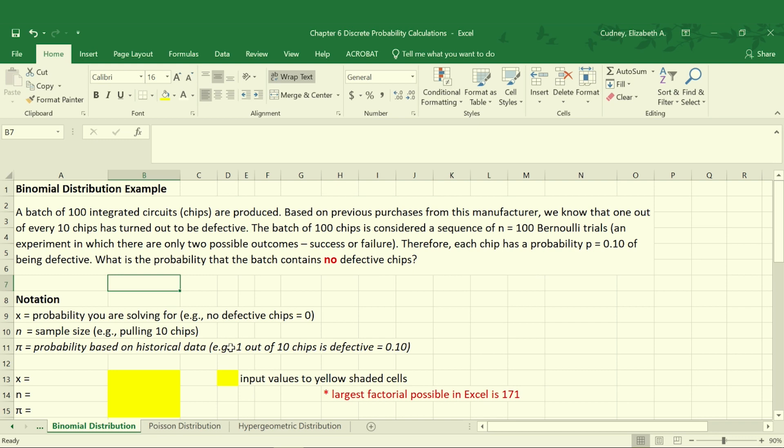Based on that past experience we know that each chip has a probability, our p-value, of 0.10 of being defective, because from that past experience one out of ten chips was defective. When we get this batch of a hundred chips in, we want to know what the probability is that it will contain no defective chips. So if we think about it, since we have a hundred chips and our p is 0.10, we would expect ten chips to be defective. So even starting off with this problem we would expect the probability of no chips to be defective to be pretty small, right.